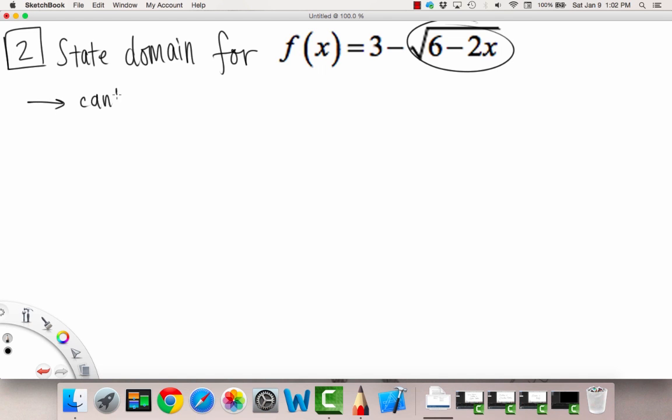So I'll just write that down because it's so important. We're not allowed to take the square root of a negative number. So that means that whatever's on the inside, so in this case 6 - 2x, whatever's on the inside has to be greater than or equal to 0, right? It could equal 0, that's fine. You can take the square root of 0 and it's just 0. So there's no harm in that, but we can't take the square root of a negative number. So it has to be either 0 or a positive number, and then we just solve for x.